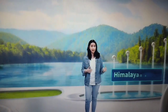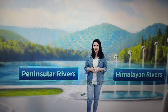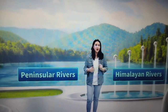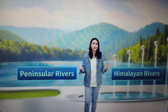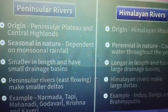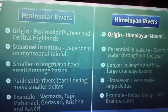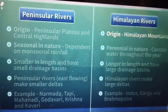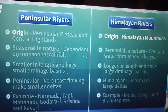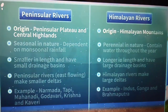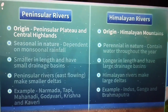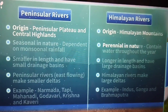So far, we have discussed the Himalayan and the peninsular rivers. Now, there are some notable differences between these two kinds of rivers. As we know, the Himalayan rivers originate from the Himalayan mountains. On the other hand, the peninsular rivers originate from the peninsular plateau and the central highlands.